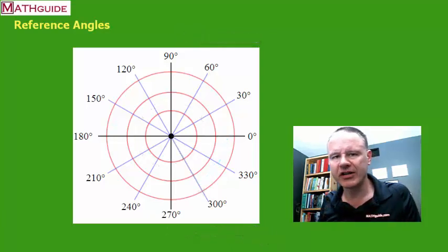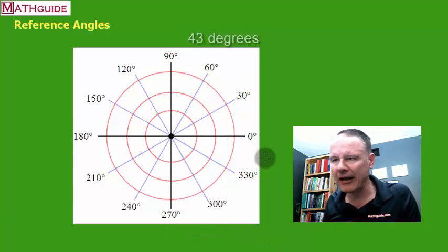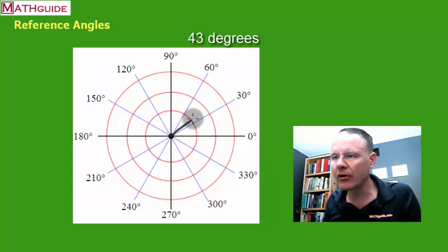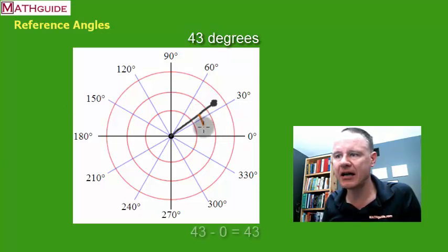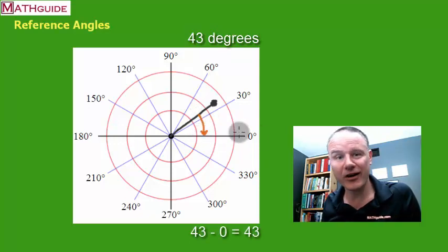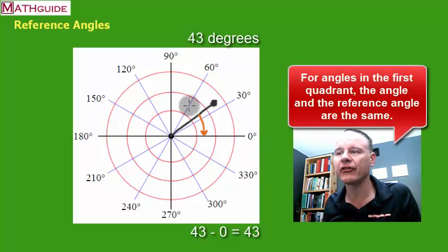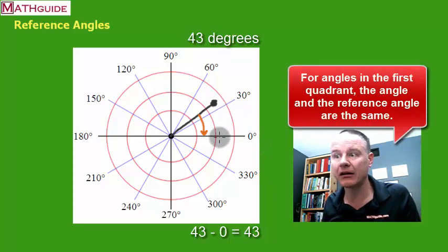So let's choose an angle in the first quadrant. Let's say we choose an angle like 43 degrees. So 43 degrees would be over here approximately. So that's our terminal side of the angle. So I want to know now what is the reference angle. Well, the reference angle is the closest angle to the x-axis right there. So it's a 43 degree reference angle. See, there in the first quadrant, the angle and the reference angle are the same.